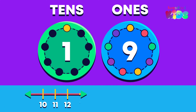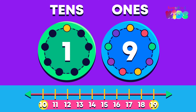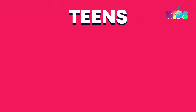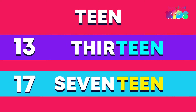We counted from ten to nineteen. These are the tens because they all have one ten and some ones. The tens can also be called the teens because many of the numbers end with the sound 'teen,' like thirteen and seventeen.